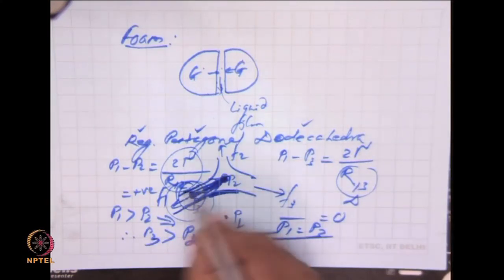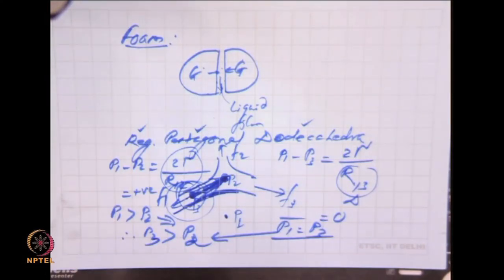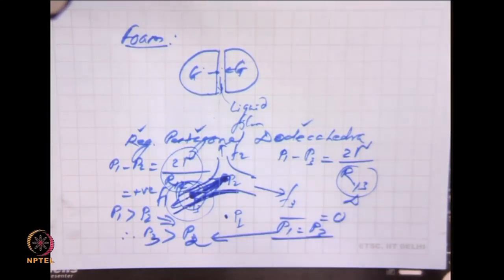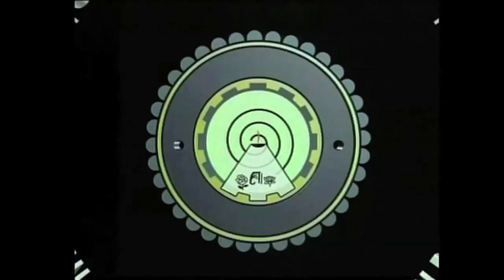The films drain and thin down over time, and may become so thin that any extraneous vibration can break the foam film. In actual foam, bubbles are not all the same size — smaller bubbles have higher excess pressure, so gas diffuses from smaller bubbles into larger ones. This is another mechanism of foam breakdown without any rupture of films. These are the two mechanisms of foam breakdown.